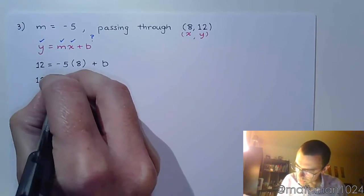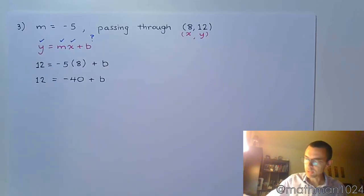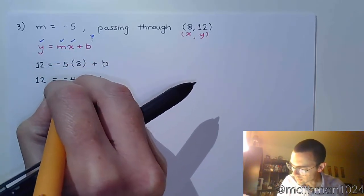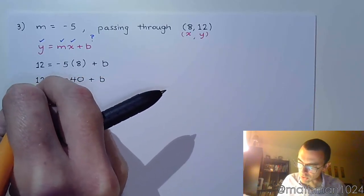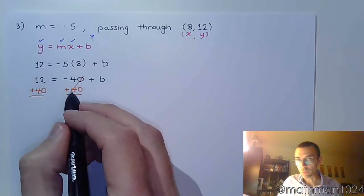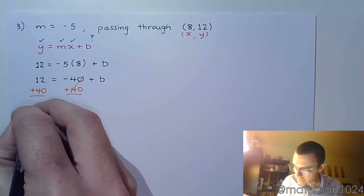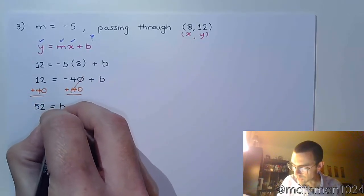So 12 is equal to negative 40 plus b. Finish getting b by itself by adding 40 to the other side. If you find that you keep making careless mistakes because you're not showing this step, then show that step. Make sure that everything you do is legitimate. What you do on one side, you do on the other side. And so now this gives me 52 equals b.